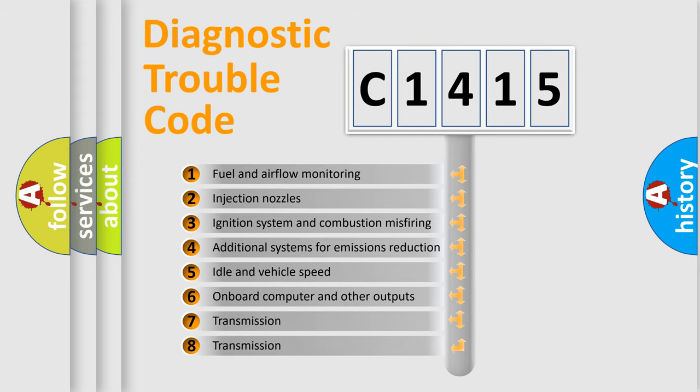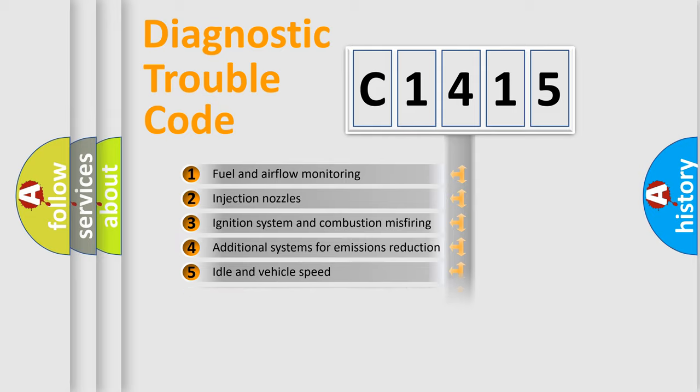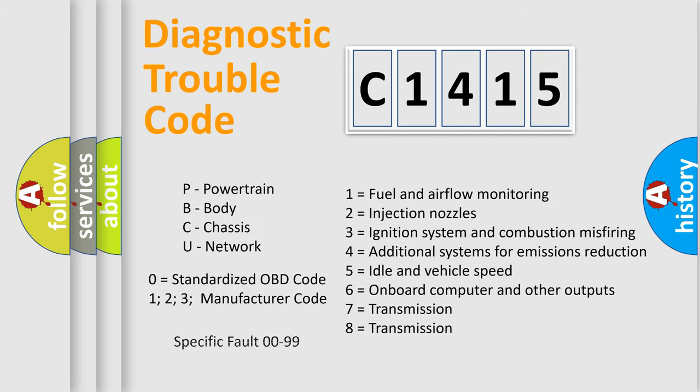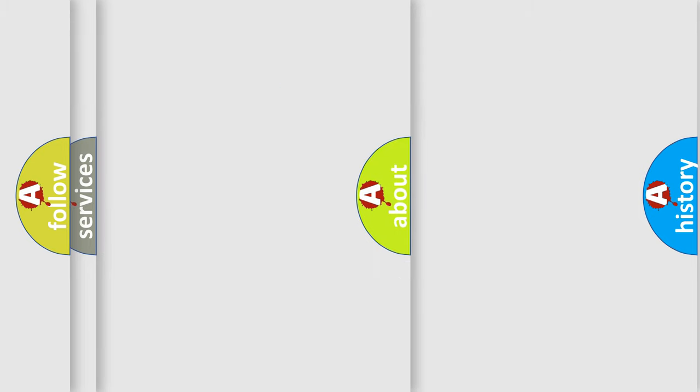The third character specifies a subset of errors. The distribution shown is valid only for the standardized DTC code. Only the last two characters define the specific fault of the group. Let's not forget that such a division is valid only if the other character code is expressed by the number zero.